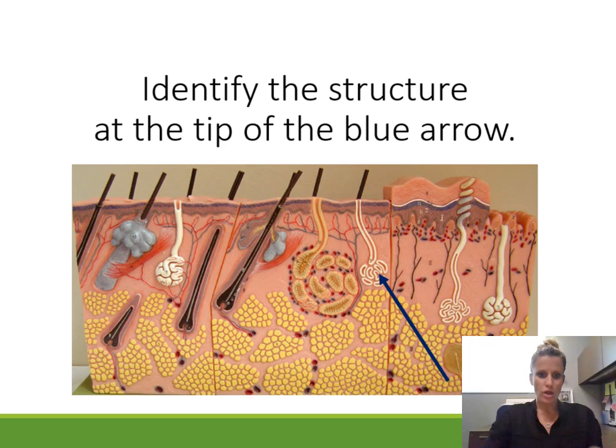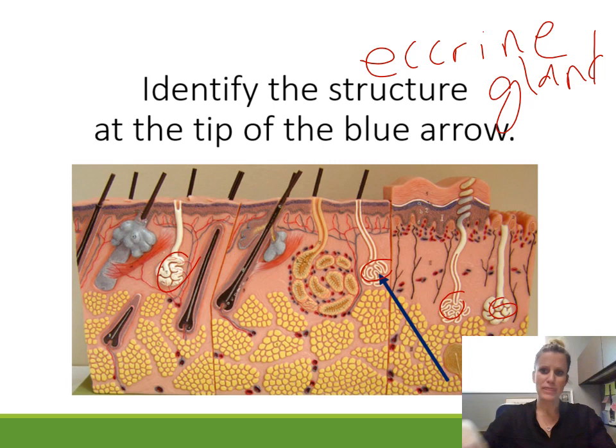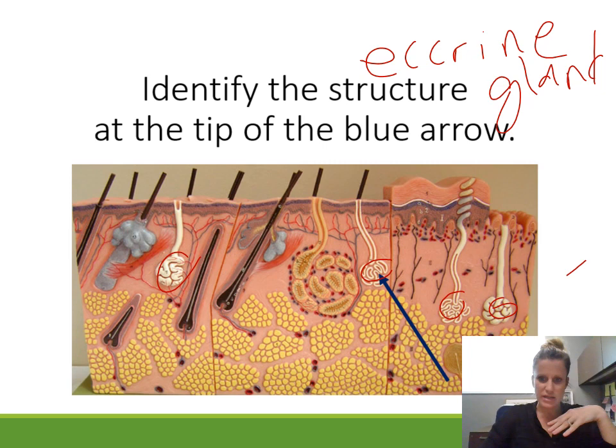Identify the structure. This is pointing to one of the glands present in the skin. The sebaceous glands were the oil glands. There are also two different types of sweat glands. These little white ones are eccrine sweat glands — you could say eccrine gland, eccrine sweat gland, or technically eccrine sudoriferous gland.